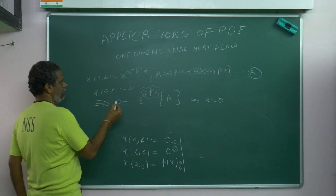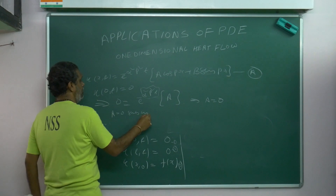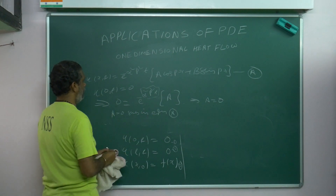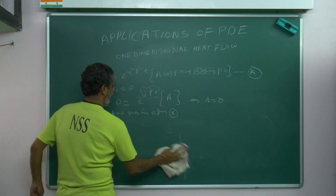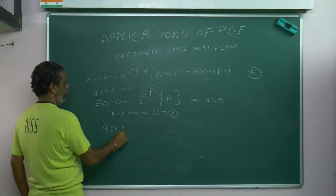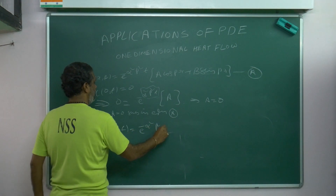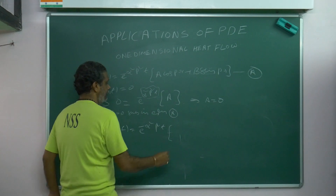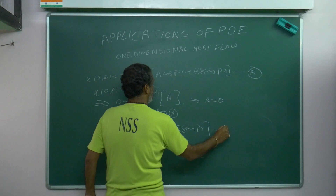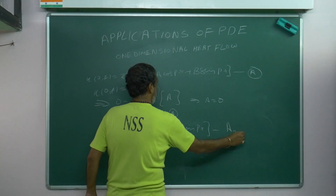A = 0. Substituting A = 0 into equation, we get: u(x, t) = e^(−α²b²t) · B sin(bx). Call this equation 2.